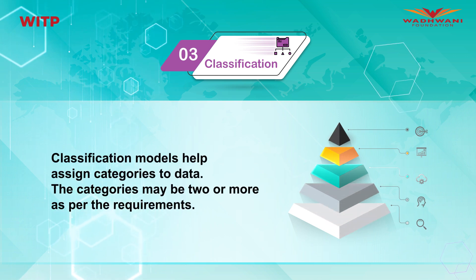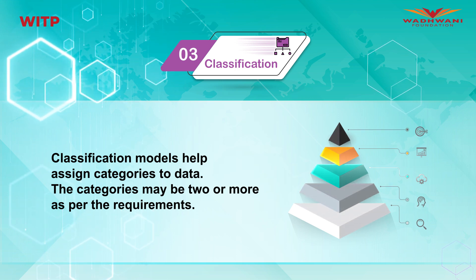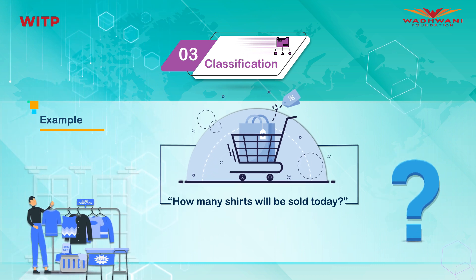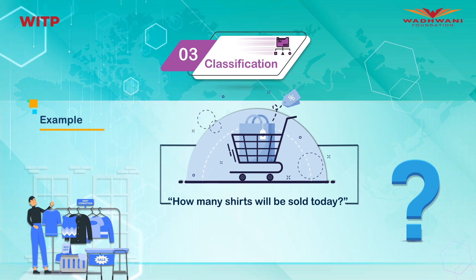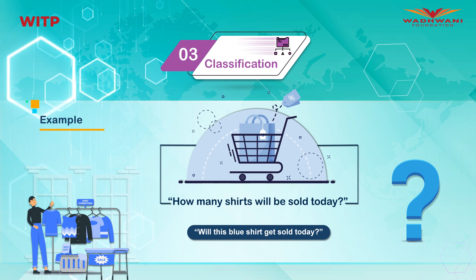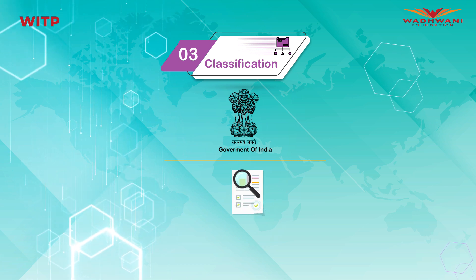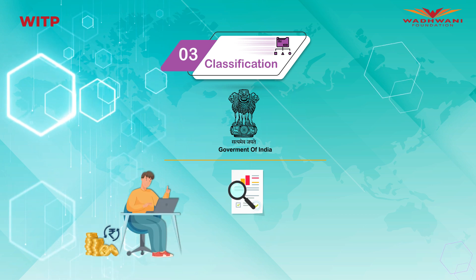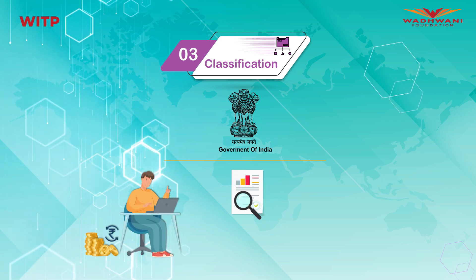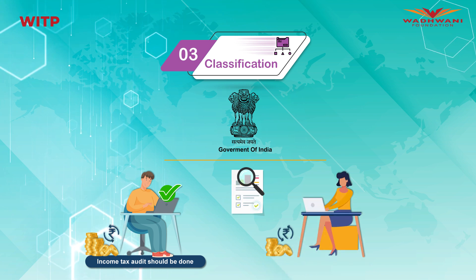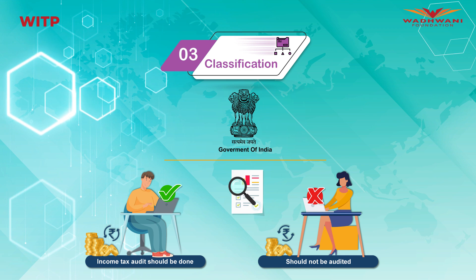Finally, let's look at data classification models, which help assign categories to data — two or more categories as per requirements. For example, in the retail sector, 'how many t-shirts will be sold today' is a prediction problem, whereas 'will this blue shirt get sold today' is a classification problem with a yes or no answer. In the government context, a classification model can assign income taxpayers into two classes: those exhibiting behavior suggesting potential fraud — who should be audited — and those who are genuine taxpayers and should not be audited.